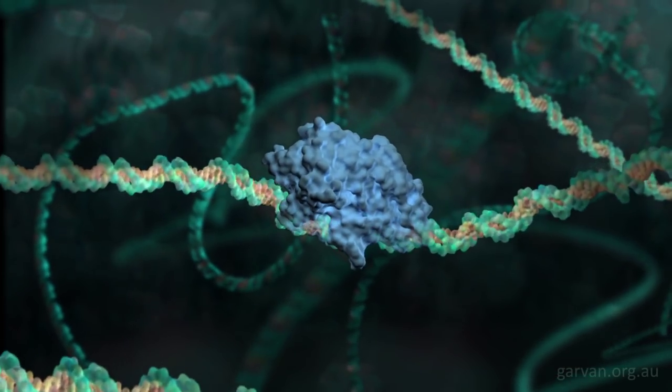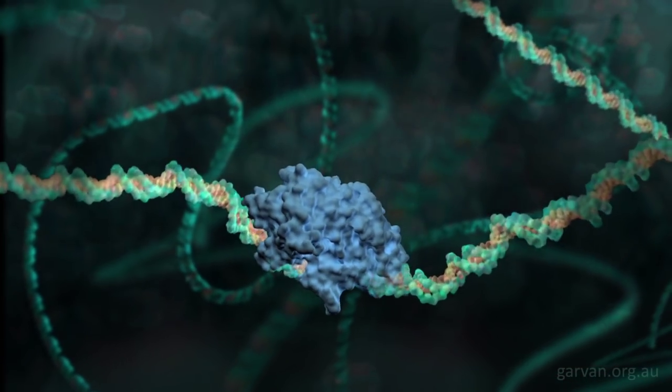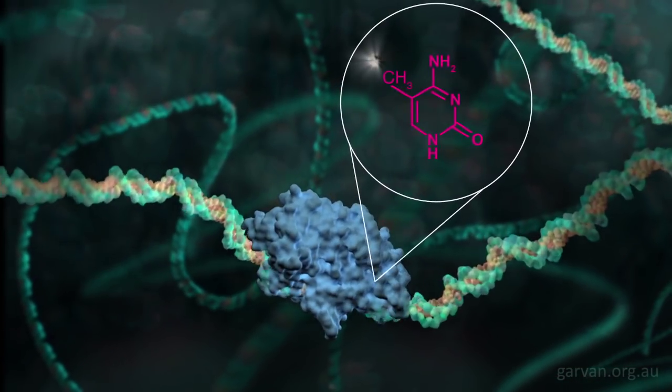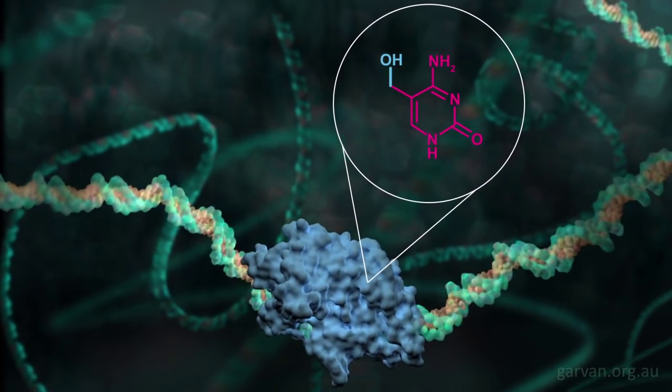Here we see the enzyme TET binding to methylated DNA and causing a chemical change to the methyl tag.